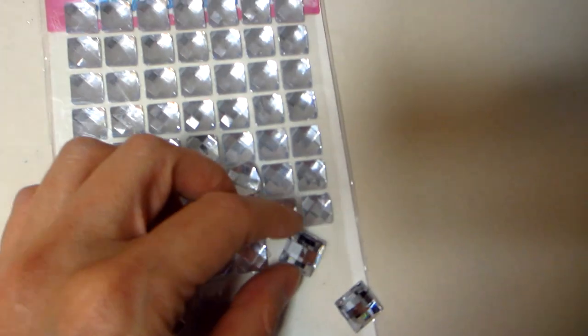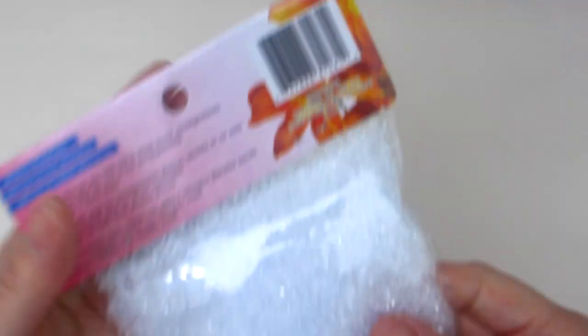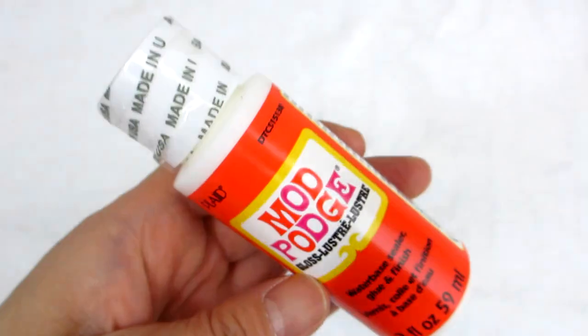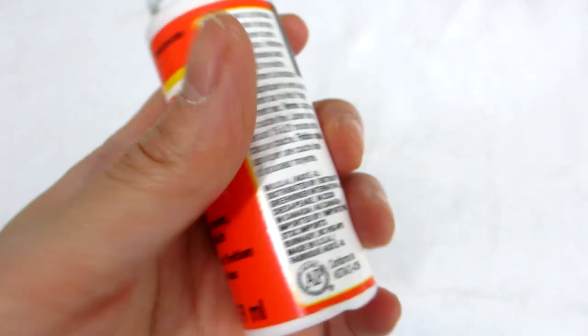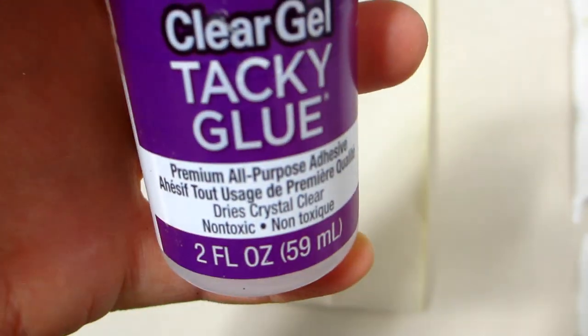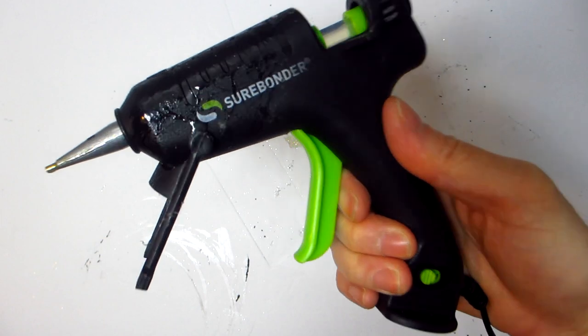We also need some white vase filler and some white paint or in my case leftover white primer originally purchased from my local hardware store. To help us out with today's craft project we will also be using some Mod Podge, some clear tacky glue and our handy dandy hot glue gun. My glue gun was purchased from Amazon.